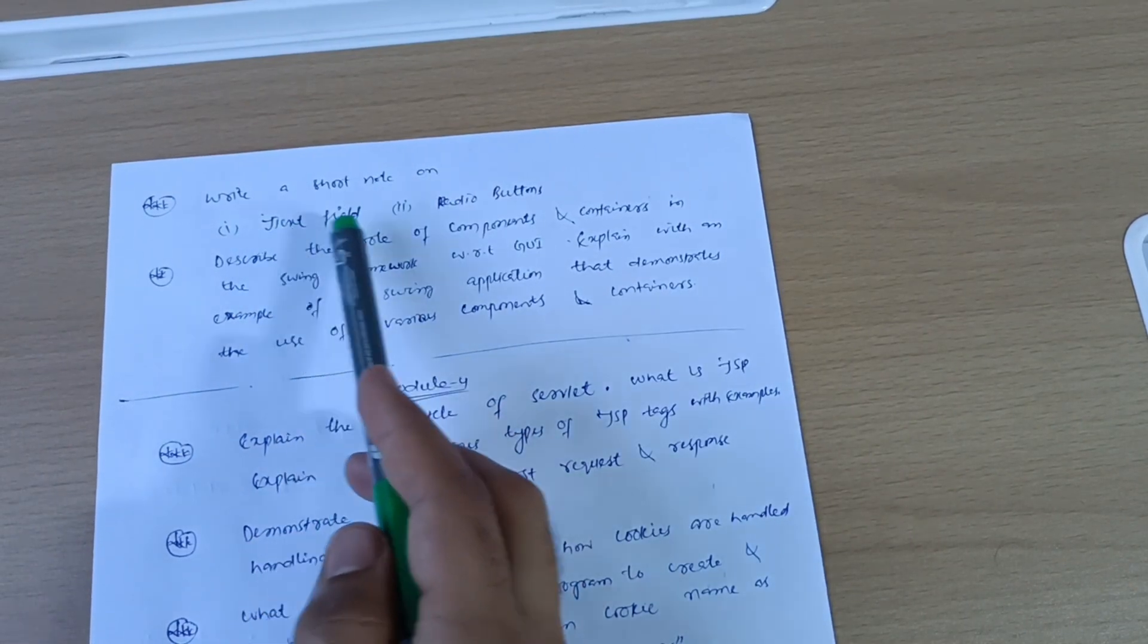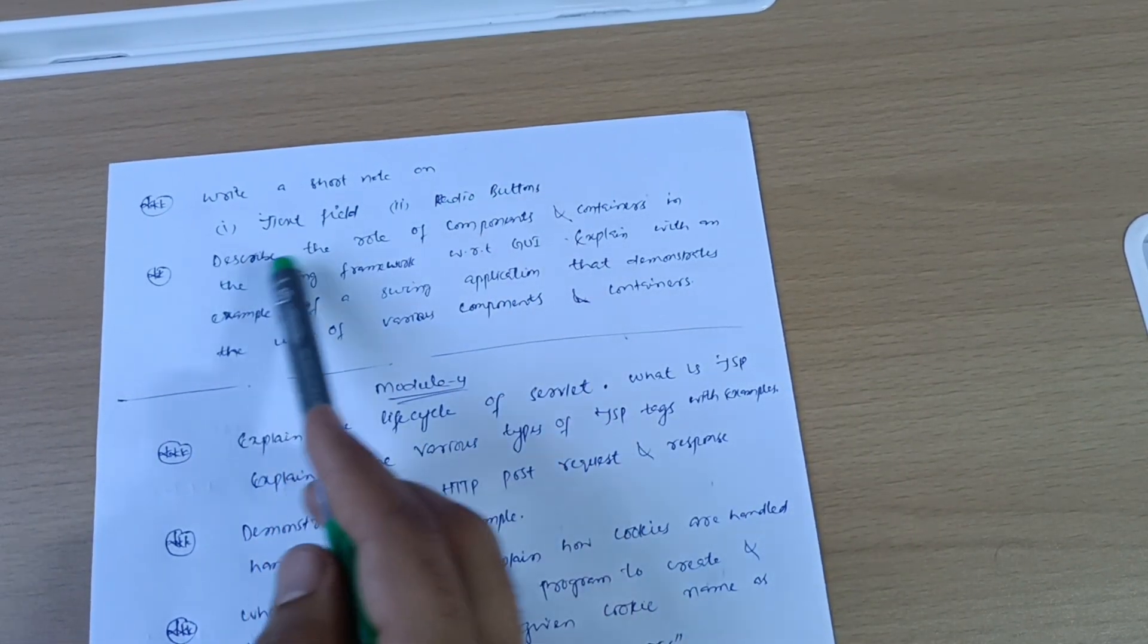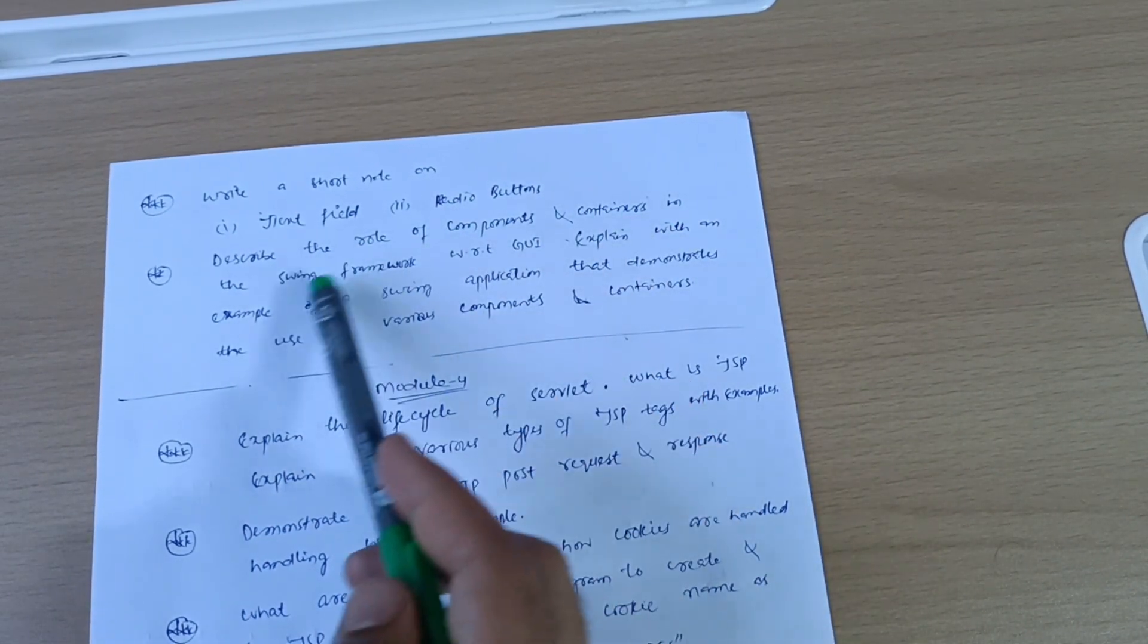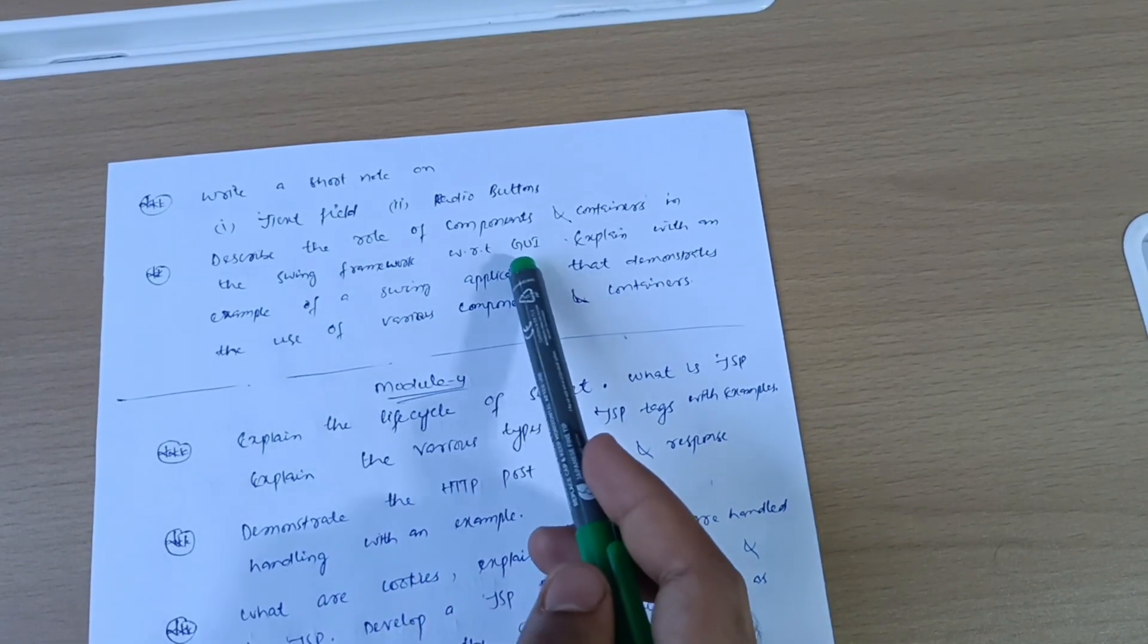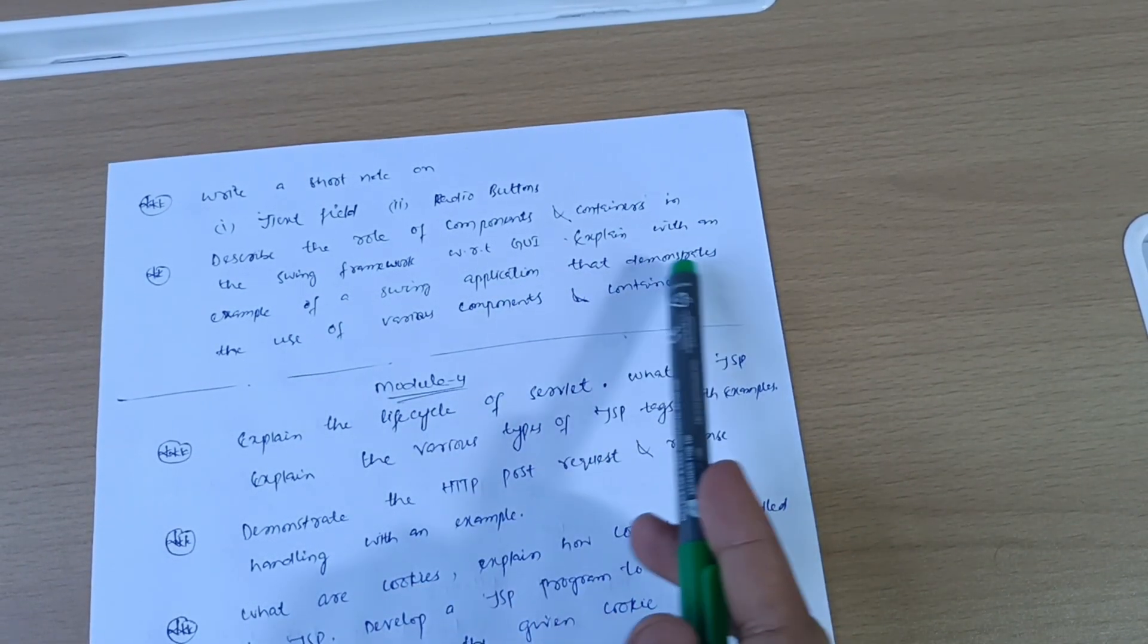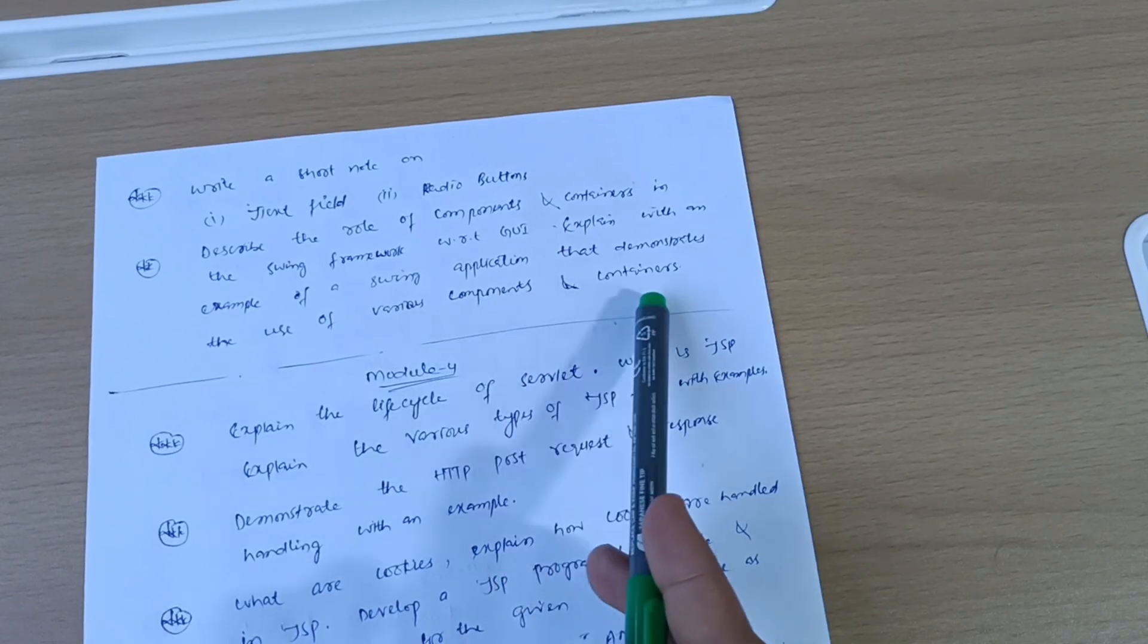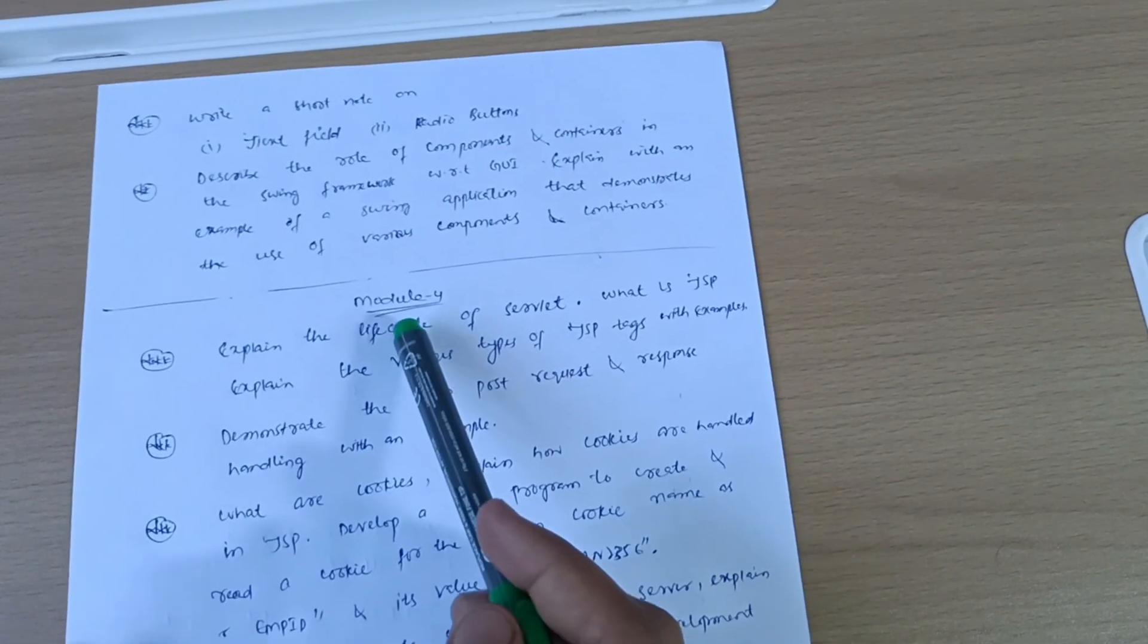Go through it. Next two questions from model three are here: write a short note on JTextField and radio buttons. Describe the role of components and containers in the Swing framework with respect to GUI. Expand with an example of a Swing application that demonstrates the use of various components and containers. Next is model four.